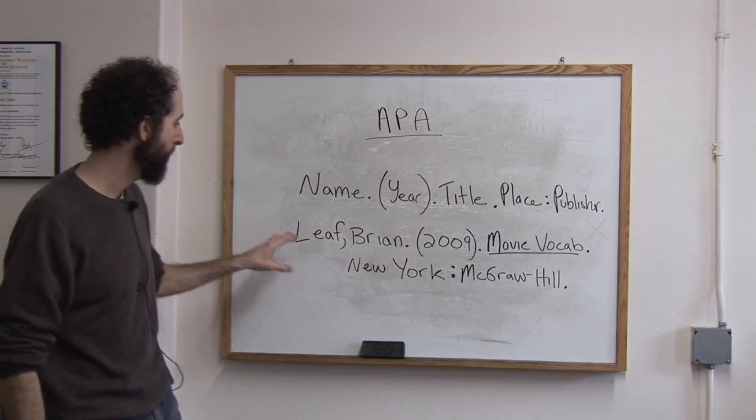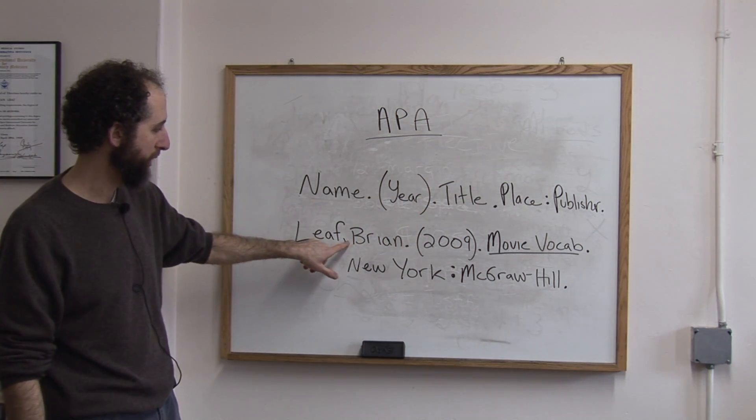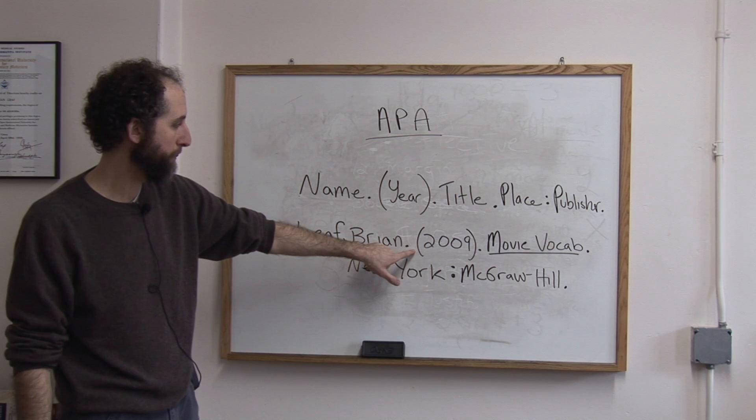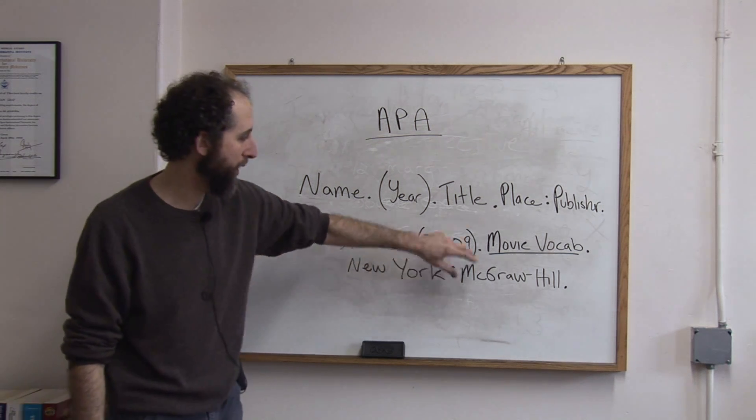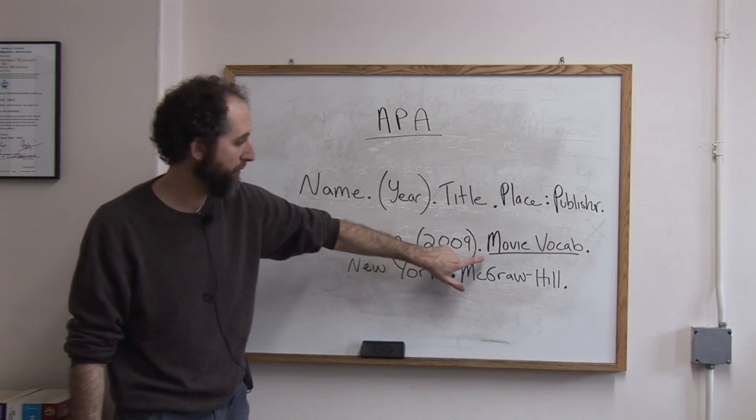So here's an example. Leaf, comma, space, Brian, period, space. 2009 in parentheses, period, then the space.